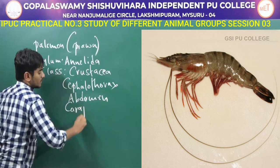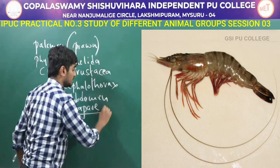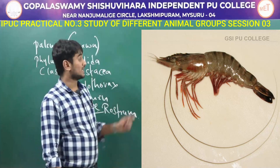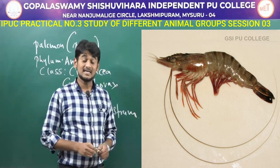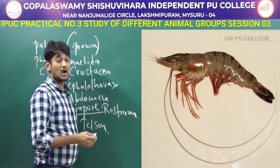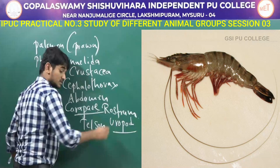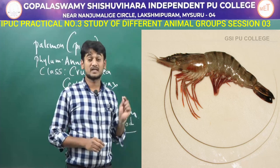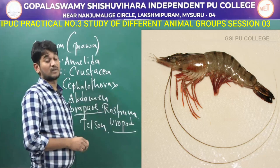The carapace extends into a rostrum. The abdomen has six pleopods or swimmerets, and walking legs. Terminally there is a pointed structure called the telson, and presence of a broad uropod. In total, sixteen jointed appendages are present from cephalothorax to abdomen.